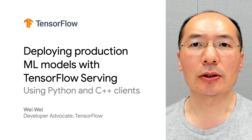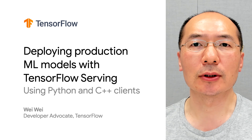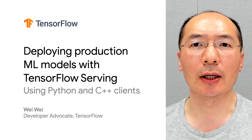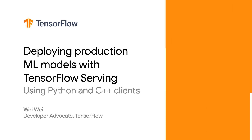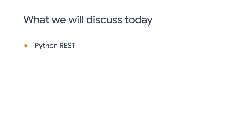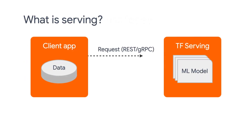While this is interesting, we still need to learn how to send requests using different programming languages. So in this episode, we're going to discuss how to send REST and gRPC requests to TF Serving with Python and C++. Remember in our first episode, we mentioned that your client app can send REST or gRPC requests to TF Serving, and TF Serving will send back the corresponding responses.